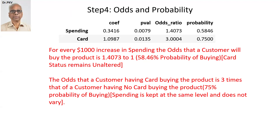Step 4. We have done step 1, step 2, and step 3. This is step 4. Remember, there are six steps we have to understand in the analysis of logistic regression. Step 4: Odds and probability. This is very important.